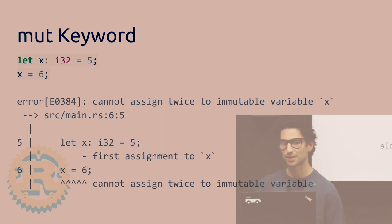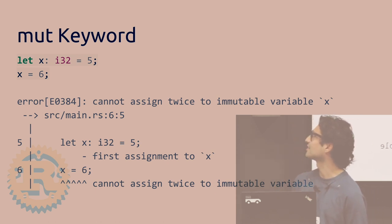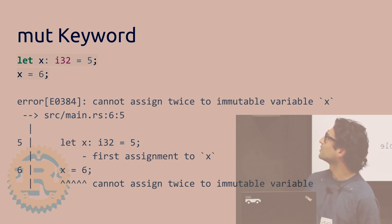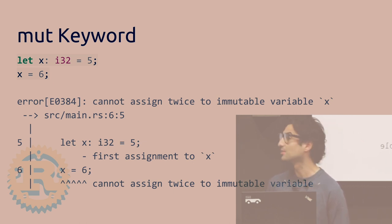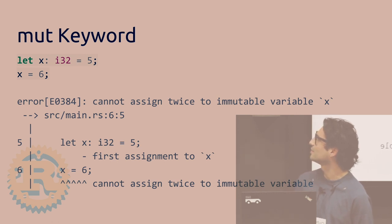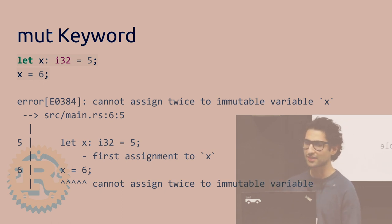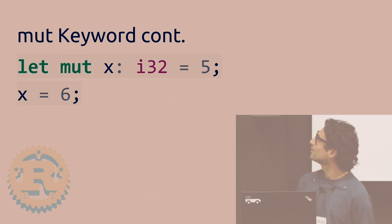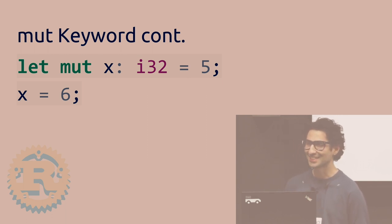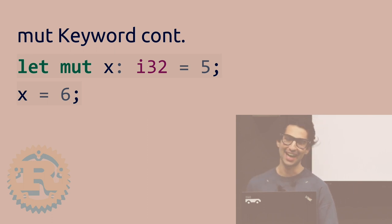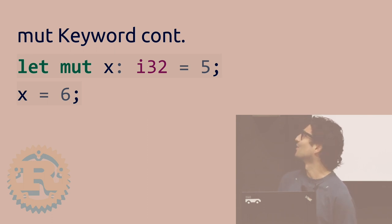This is the 'mut' keyword. So if you write 'let x = 5' and then try to do 'x = 6', there's going to be a compiler error because the variable x is constant by default. The way you fix that is you use the 'mut' keyword, which means that you can modify it — it's mutable. Now you can do x = 6 and everyone is happy.